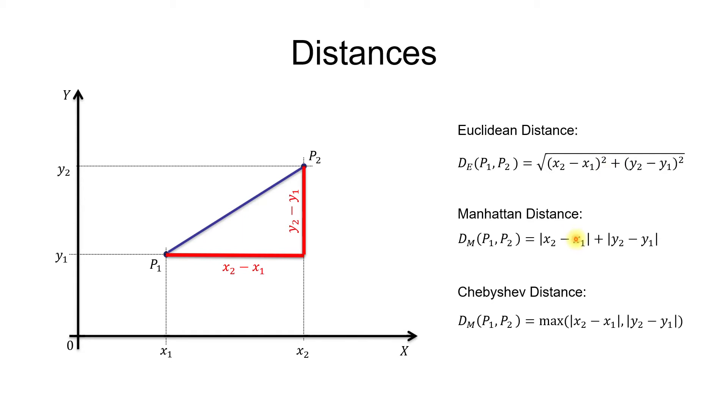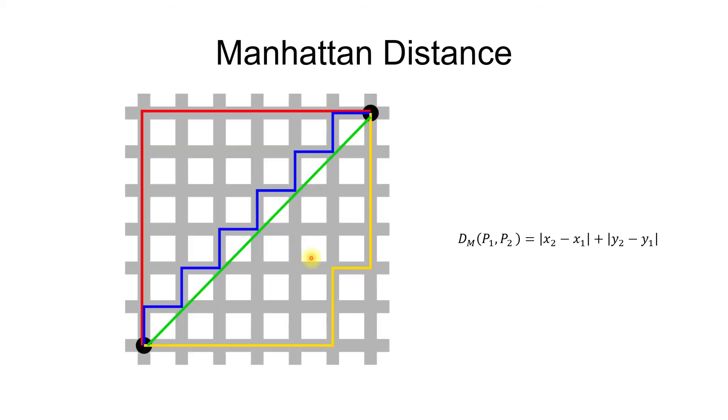Anyway, in case of Manhattan, these two values denote the lengths of the two sides of the triangle, and they are added. This means that this is the combined length of the two sides of the triangle. In case of Chebyshev, it's the maximum, so only one side, in this case this one, the longer one, is the Chebyshev distance. But what is the real meaning of these two strange mathematical distances?